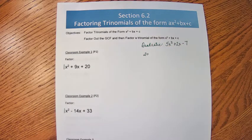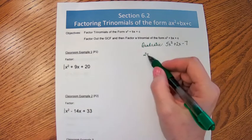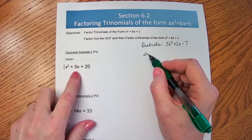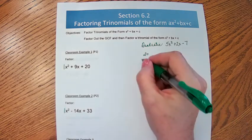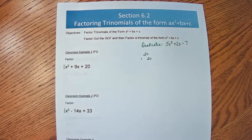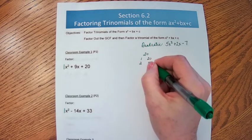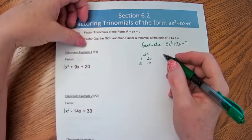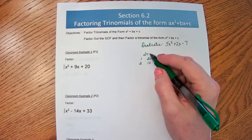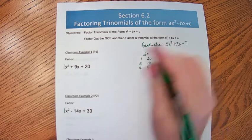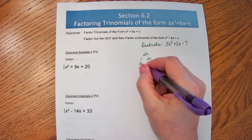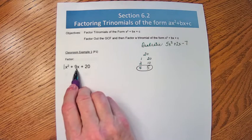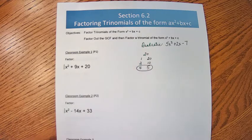On the side, we're going to list all the factors of positive 20, all the numbers multiplied together that give us 20, and we're going to stop when those two factors add up to 9. So 1 times 20, those don't add up to 9. 2 times 10, those don't add up to 9. And you'll be using your calculator for these. Does 3 go into 20 evenly? No. 4 times 5. And guess what? 4 times 5 equals 20, but 4 plus 5 equals 9. So the two numbers I want to use are 4 and 5.